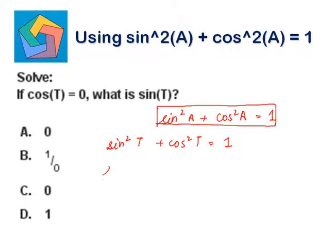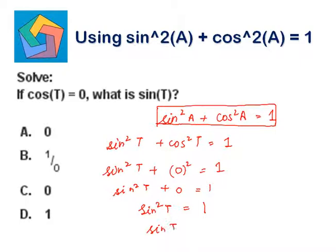So, sine squared t plus cos t is given as 0. So 0 squared is 0. Sine squared t plus 0 squared is 0, which equals 1. Sine squared t is equal to 1. Sine t is equal to square root of 1 — taking square root both sides — so sine t is equal to 1, taking positive square root only. So 1 is the answer.